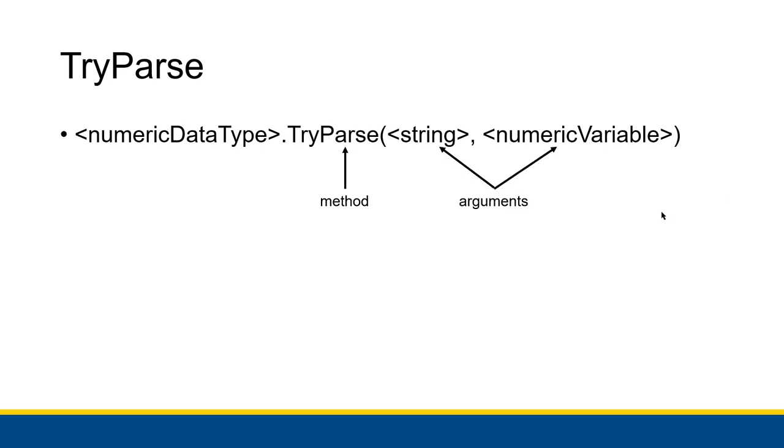Any procedure has these parentheses where you put stuff inside of it. Those are called the arguments of the procedure or arguments of the function. These are things that you give the procedure so that the procedure can work with them. In this case, our arguments are the string that we want to try to convert into a number and a numeric variable. It's a variable of a numeric type, specifically the same type as the numeric data type that we're using right here.